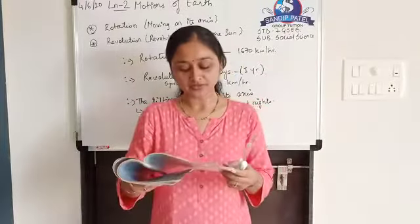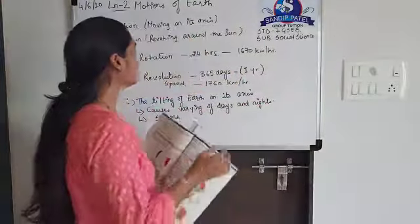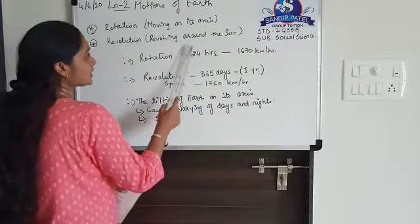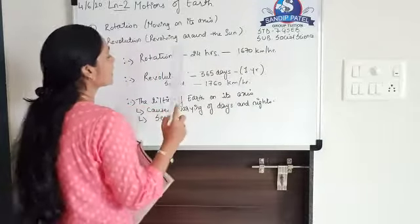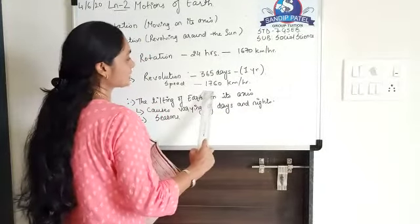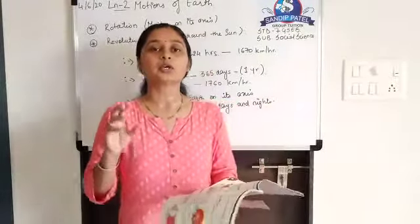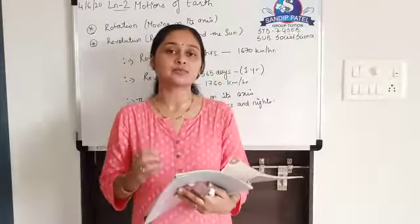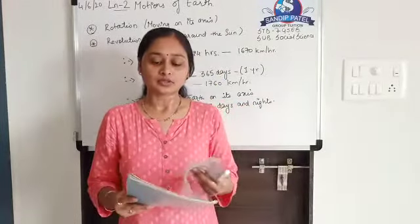So in this chapter, we studied about rotation of the earth — which is on its own axis — and revolution, which means revolving around the sun. Rotation takes 24 hours with a speed of 1670 km/hr. Revolution takes 1 year, that is 365 days, with a speed of 1760 km/hr. The earth's axis is tilted, which is the reason why we have various lengths of day and night and different seasons. This completes chapter 2 of your standard 7 book.